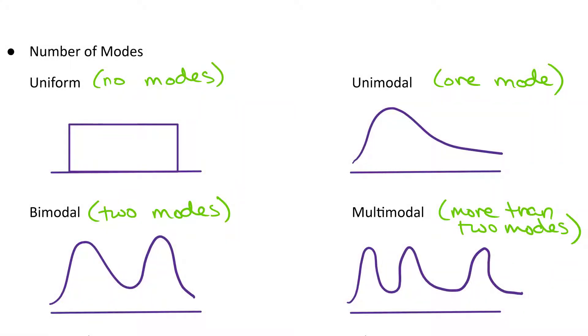A secondary way that we can describe shape is with respect to the number of modes. Now, you always need to describe your shape as skewed left, skewed right, or approximately symmetric. But, in addition to that, we are going to often comment on the number of modes.